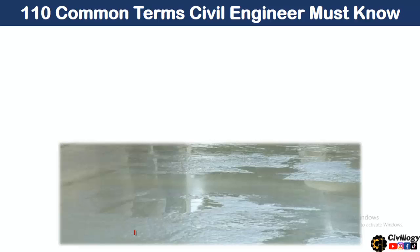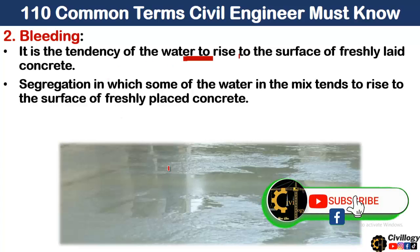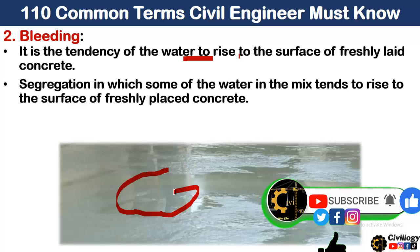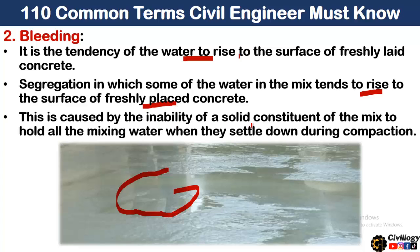The second most common term is bleeding. It is actually a type of segregation. It is the tendency of water to rise to the surface of freshly laid concrete. As you can see in this picture, water has risen to the surface due to improper mixing or using the wrong water-cement ratio. This is caused by the inability of the solid constituents of the mix to hold all the mixing water when they settle down during compaction.